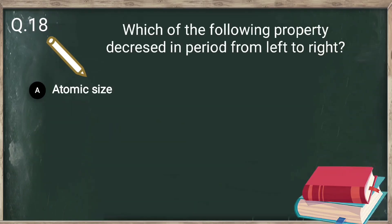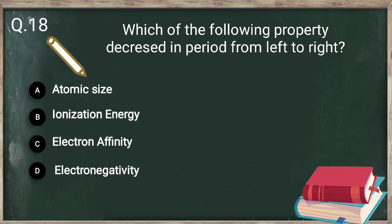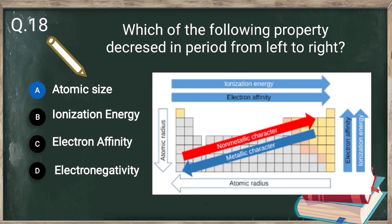Question number 18: which property decreases across a period from left to right? The answer is atomic size. Students often struggle with periodic table trends, so here is an easy trick: just remember the atomic radius trend — in a period, atomic size decreases from left to right, while in a group, atomic radius increases from top to bottom. All other properties — ionization energy, electron affinity, electronegativity, and non-metallic character — have the opposite trend to atomic radius.